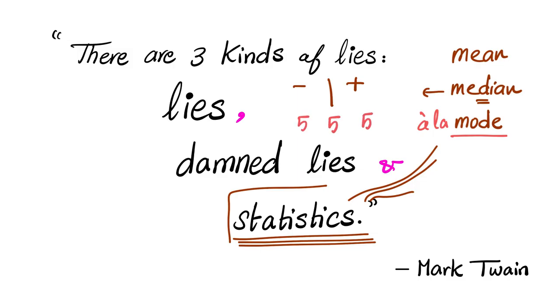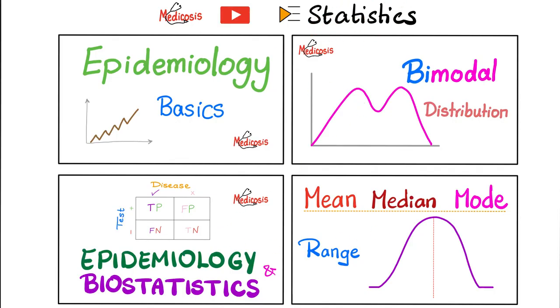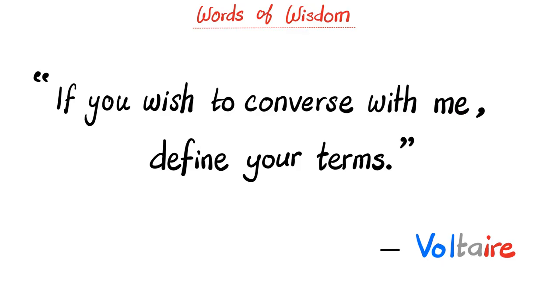So, if I have 5, 5, 5, 5, and it gets repeated more than anything else, then 5 is a la mode. 5 is trendy because it gets repeated the most. Make sure to save my statistics playlist. If you wish to converse with me, said Voltaire, define your terms.